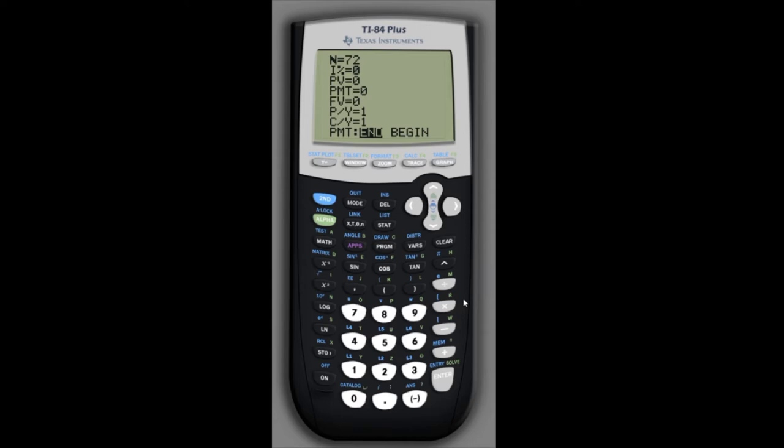Then I is the percentage interest rate. Now notice that it's I percentage, so we're not going to enter it as a decimal, we'll enter it as a percentage, 4.3% interest, so we'll just type in 4.3. And that's different from what we've done in the formulas where we would type in 0.043, but the calculator will take care of that for us.